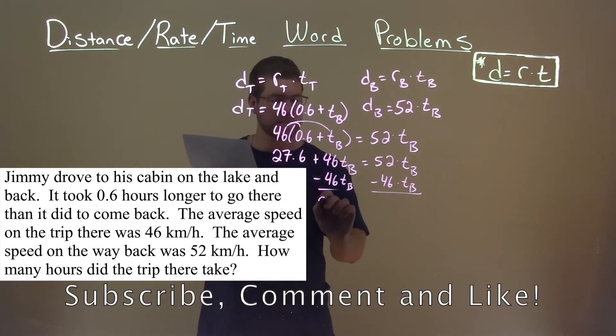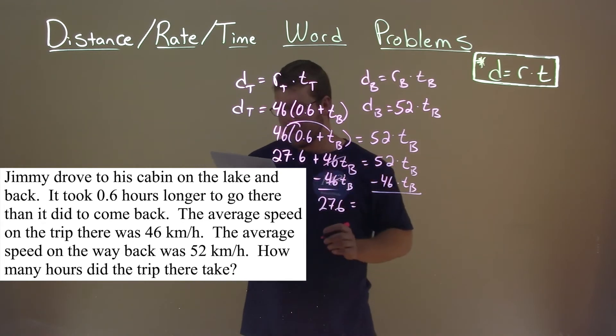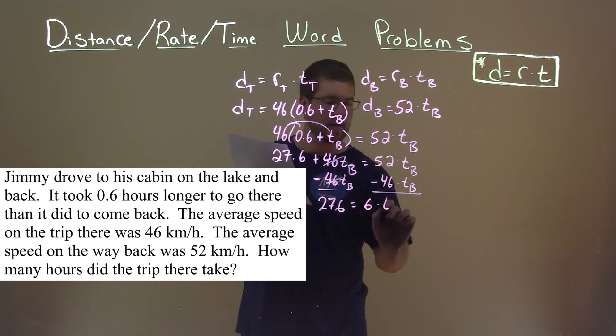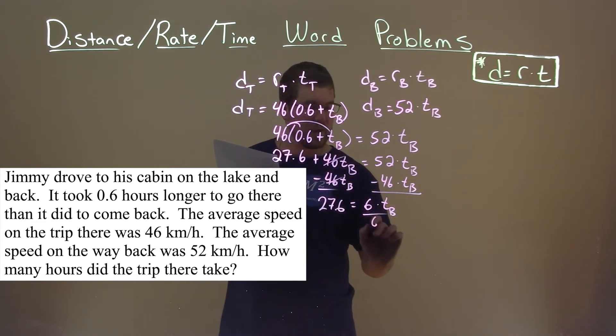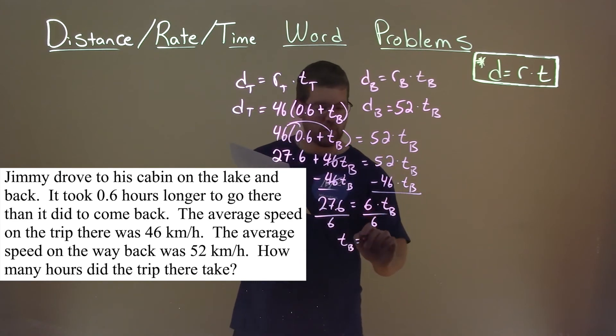We're left with 27.6 is equal to 52 minus 46, which is 6. So that's 6 times T_B. We divide both sides by 6, and we're left with T_B is equal to 27.6 divided by 6, which is 4.6.